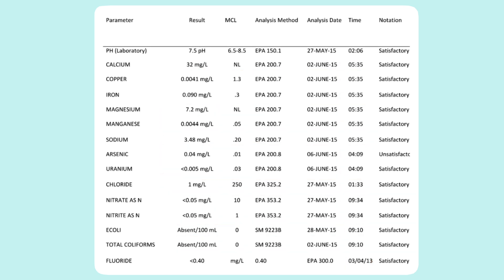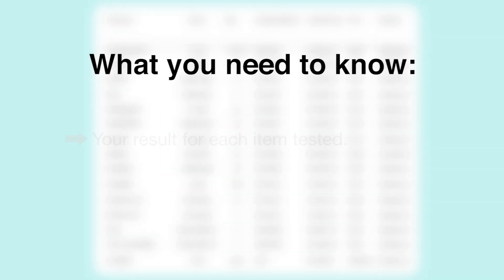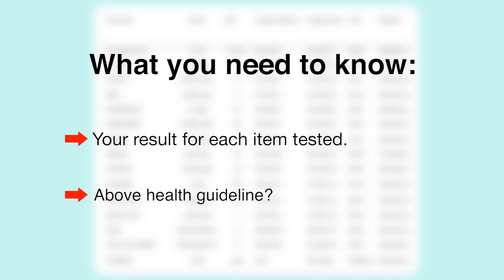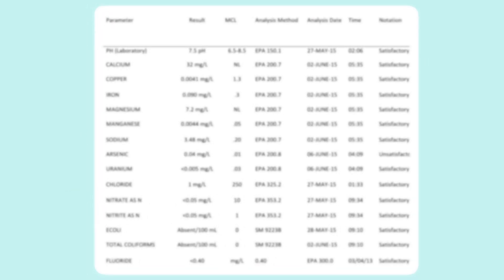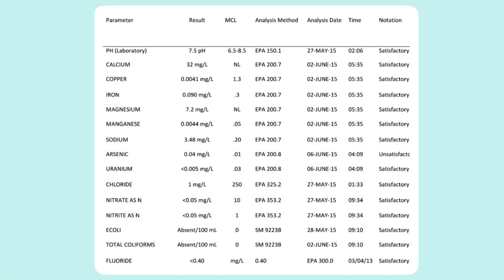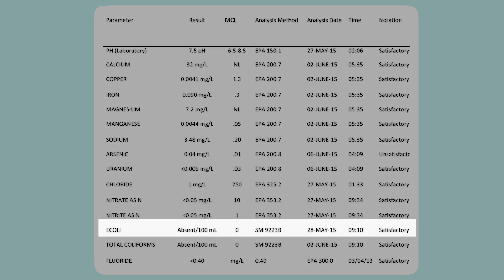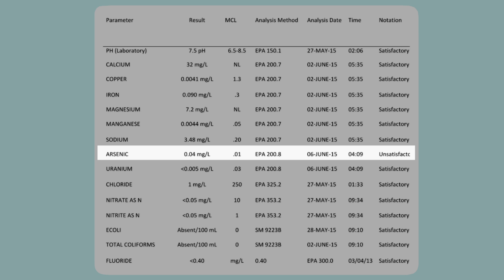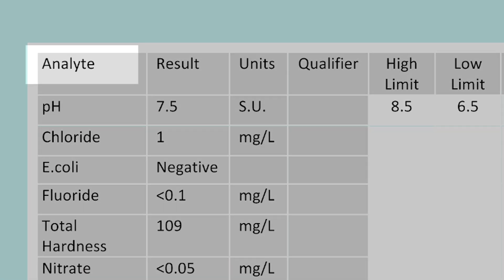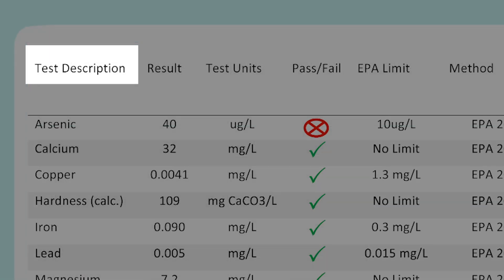There's a lot of information here. What you need to know is the result for each item you tested for and whether or not that result is above the health guideline. In this report the column labeled parameter tells you what things were included in your water test, such as E. coli, coliform, arsenic, uranium, and fluoride. Some labs call these analytes and some labs may call this column test or test description.